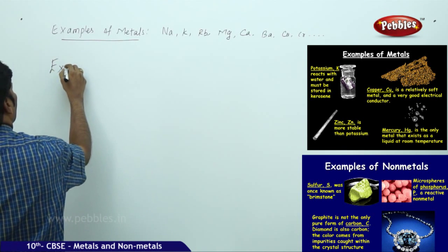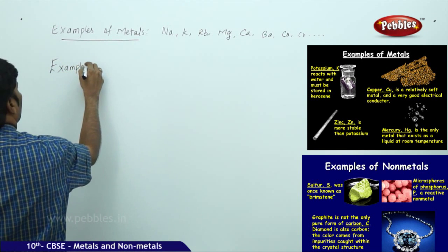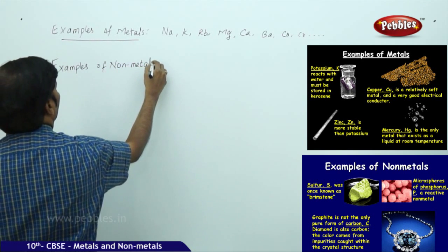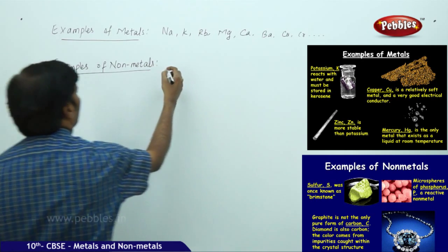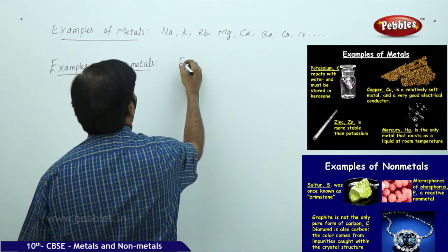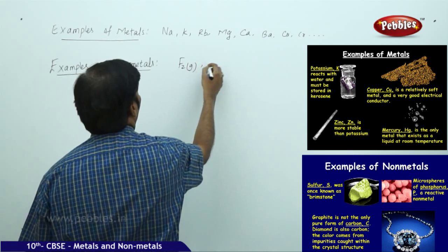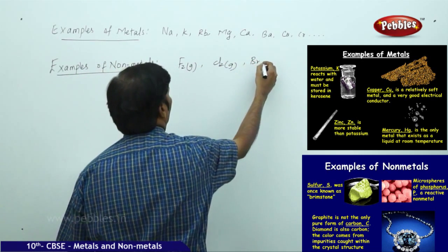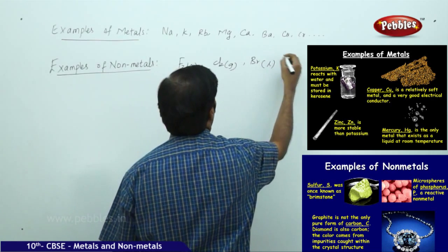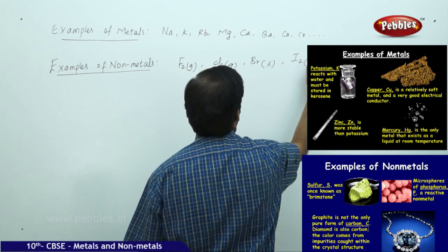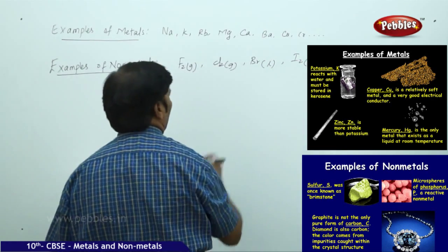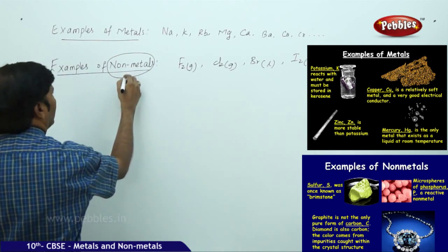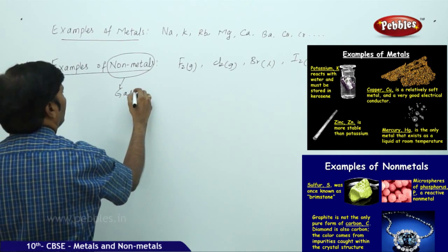Examples of non-metals - you can take chlorine gas, bromine liquid, then iodine solid, and so on. Usually, all non-metals are gases.